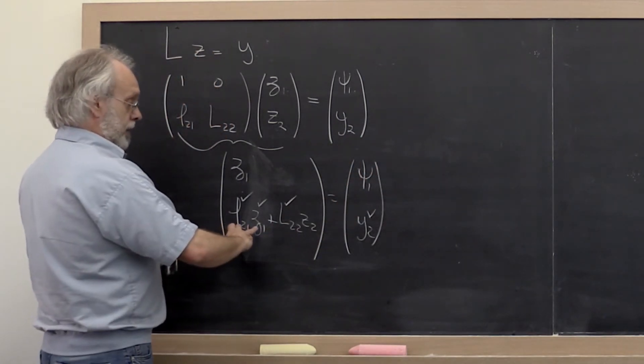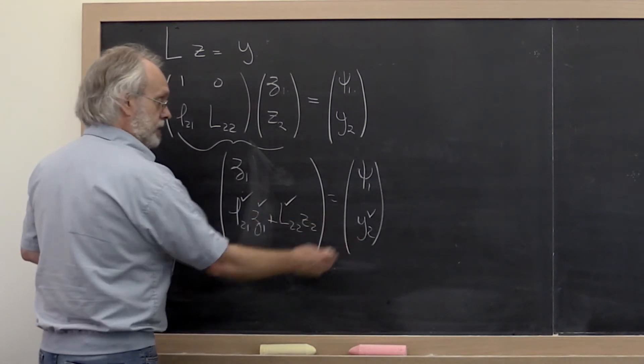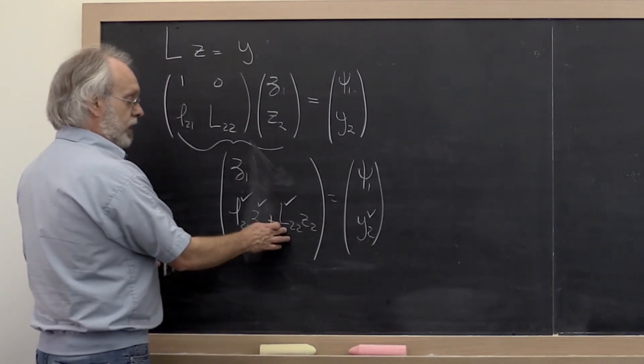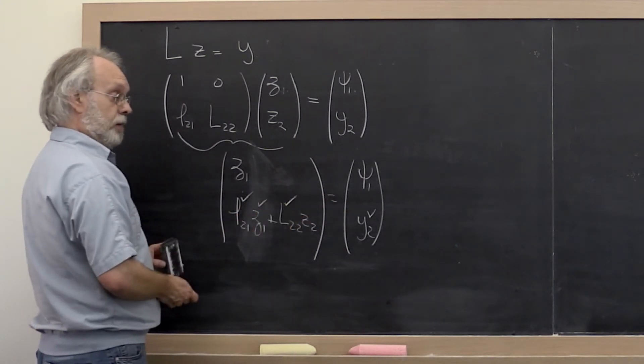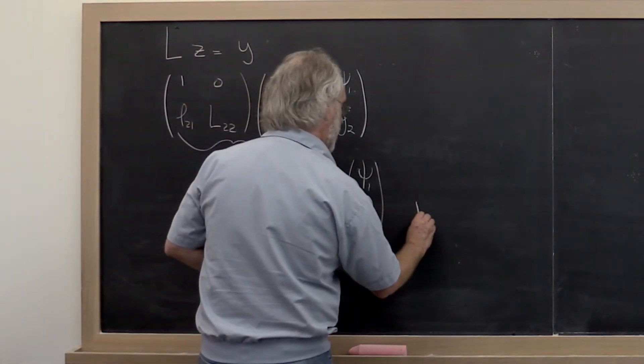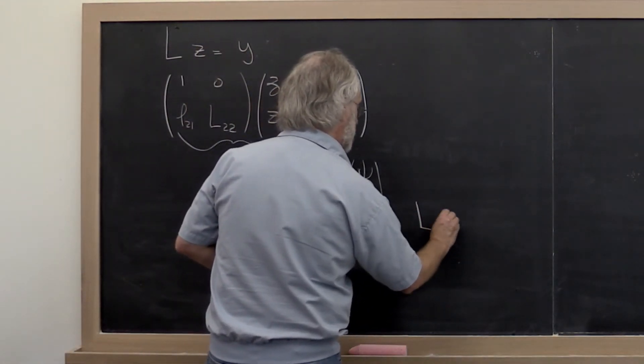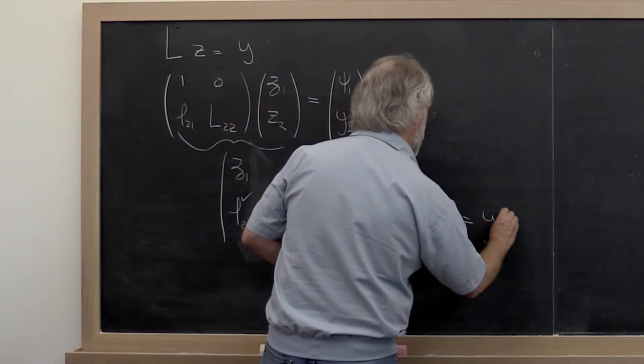So if we subtract L21 times zeta_1 from y_2, then we're left with having to solve L22 z_2 equal to y_2 minus...